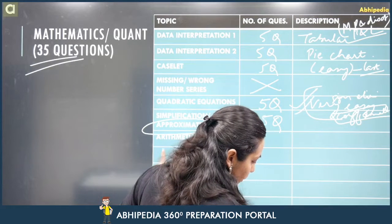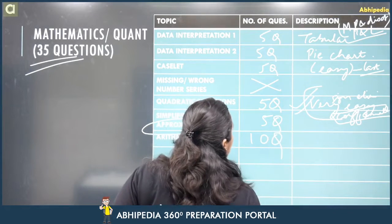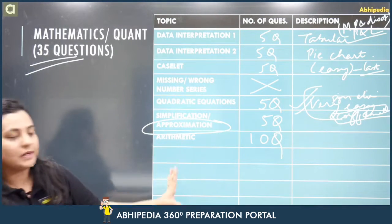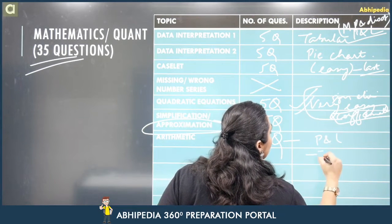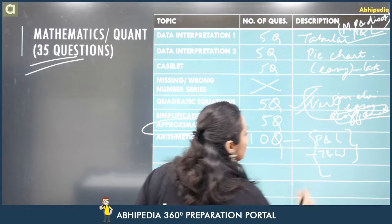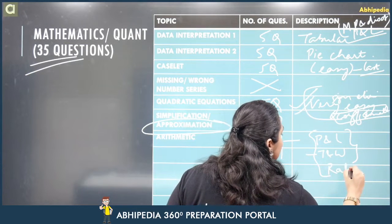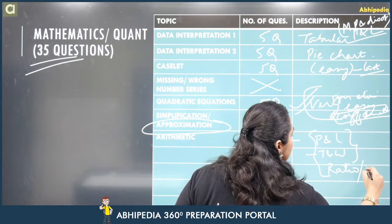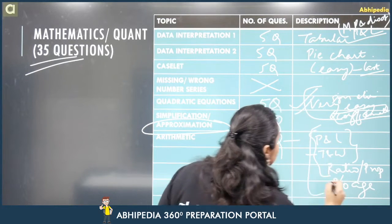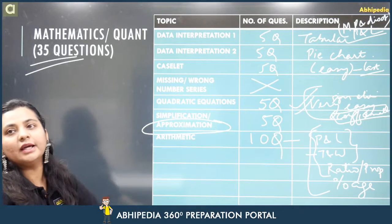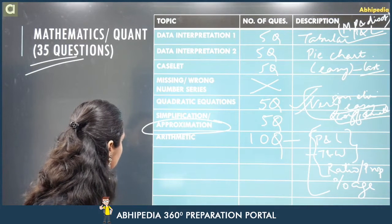Arithmetic had 10 questions. We still haven't confirmed all topics, but I'm guessing profit and loss, time and work were there as they were yesterday's favorites. Ratio and proportion, percentage — these are very common topics used across all spectrums — so I'm sure kuch na kuch in topics se toh aaya hi hoga.